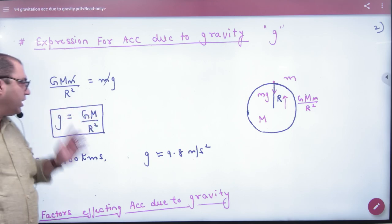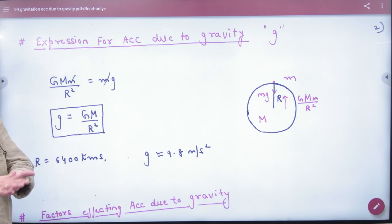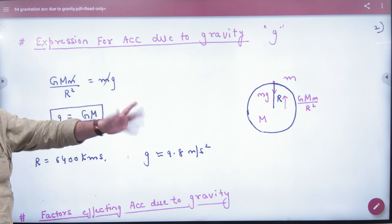The formula is g = GM by R squared. So in this small g value, GM by R squared, M means mass of planet, not apple. That point mass is cut.